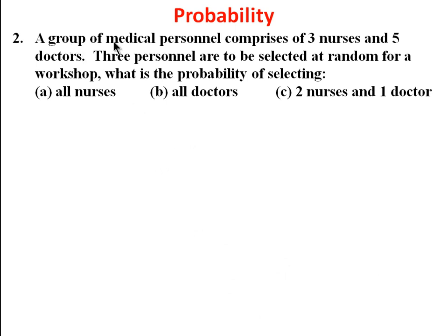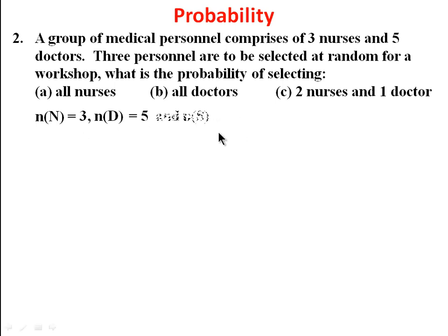The second problem: a group of medical personnel comprises three nurses and five doctors. Three personnel are to be selected at random for a workshop. What is the probability of selecting: (a) all nurses, (b) all doctors, (c) two nurses and one doctor? The number of nurses is 3, the number of doctors is 5, and the total n(S) = 8.